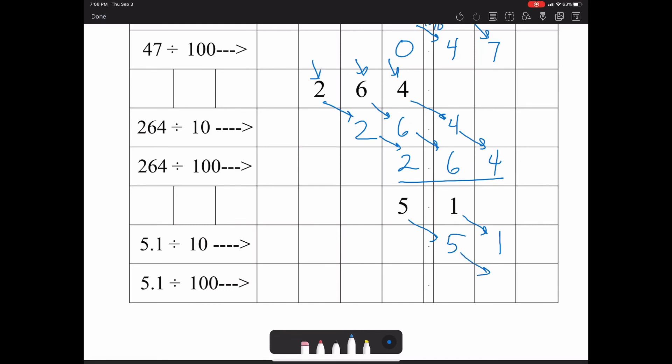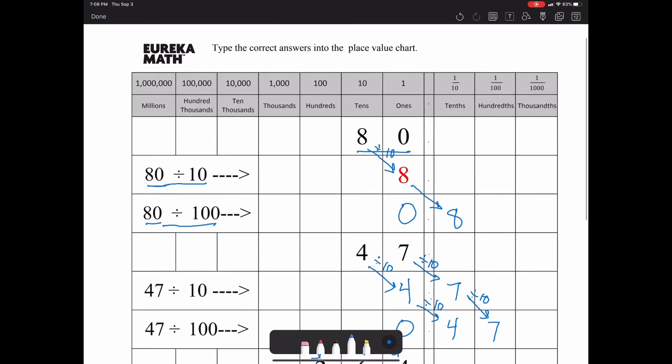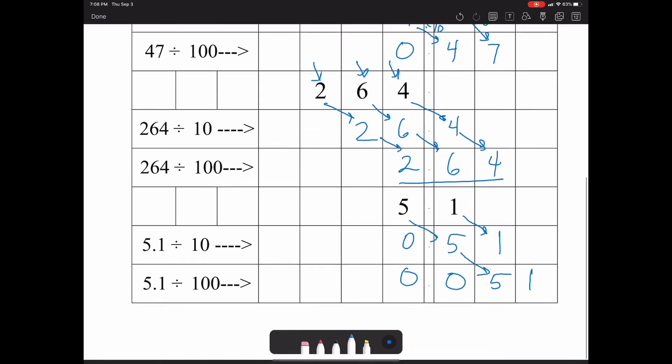Shift over two spaces, and now we have 51 thousandths.